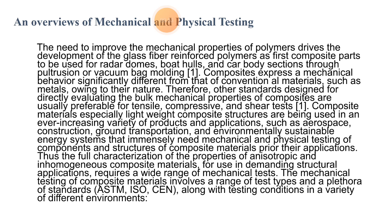A need to improve the mechanical properties of polymers drove the development of glass fibres and polymers as the first composite parts to be used for radar domes, board cells, and cardboard cell body sections through frustration or vacuum bag moulding. These are the first ones. Also, composites express mechanical behaviour significantly different from that of conventional materials such as metals owing to their nature.